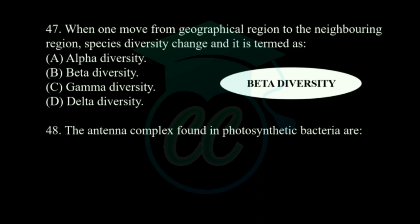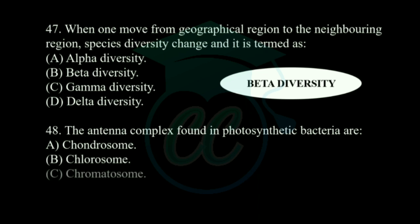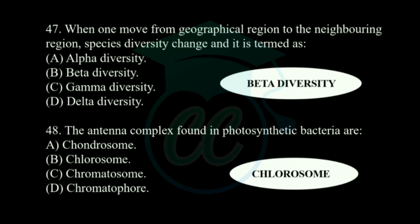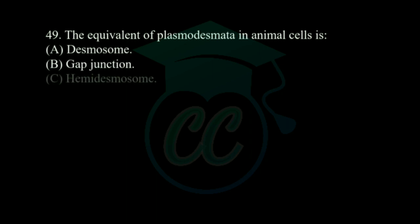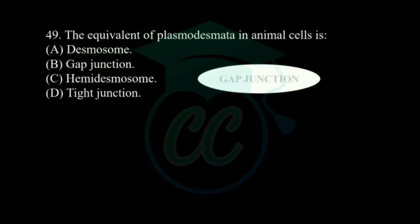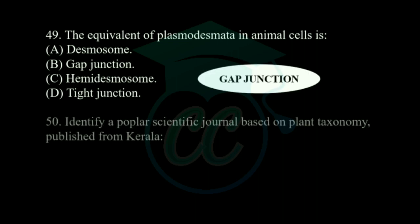Next question: when one moves from one geographical region to a neighboring region and species diversity changes, it is termed as — options: alpha diversity, beta diversity, gamma diversity, and delta diversity. The correct answer is beta diversity. Next question: the antenna complex found in photosynthetic bacteria is — options: chondrosome, chlorosome, chromatosome, and chromatophore. The antenna complex found in photosynthetic bacteria is chlorosome.